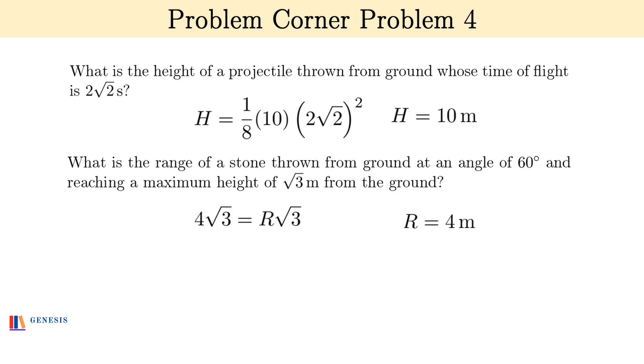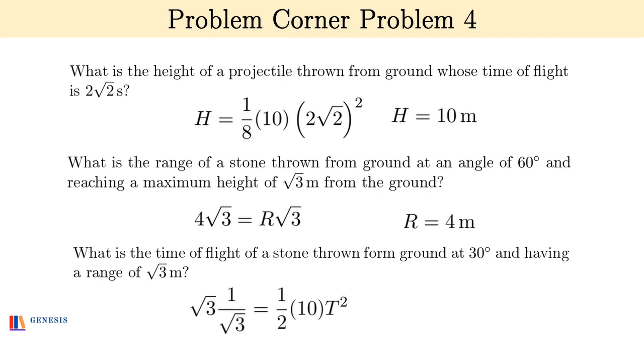Third one: what is the time of flight of a stone thrown from the ground at 30 degrees and having a range of √3 meters? R tan θ = ½gT² and so T = 1/√5 seconds. Done. Do you understand the importance of these three relations? Wherever they can be applied, they cut down the solution by half.